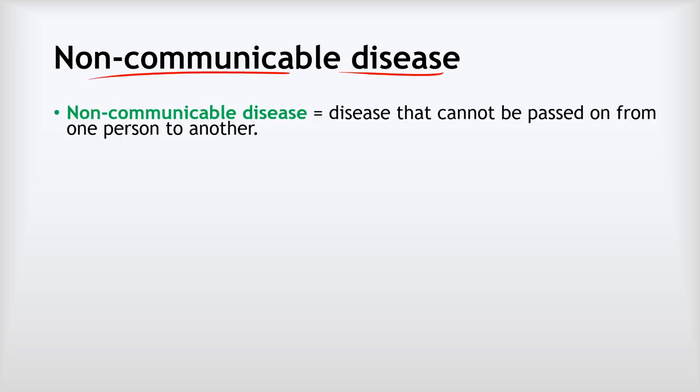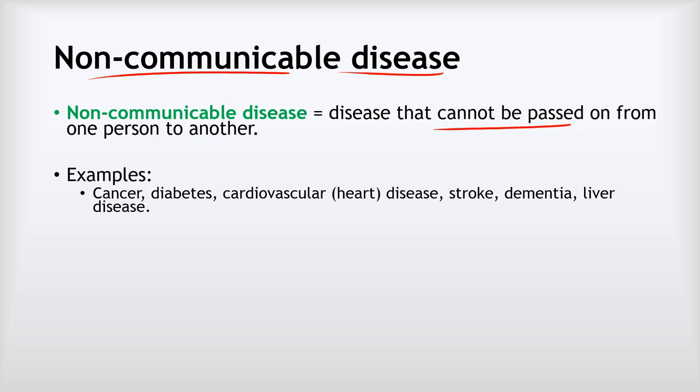A non-communicable disease is simply one that cannot be passed on from one person to another. We're talking about things like cancer, diabetes, cardiovascular or heart disease, stroke, dementia, liver disease and so on. Now all of these are real diseases, but they cannot be passed on from one person to another. If you've got diabetes you can't give it to your friend or your neighbour, and if you've got heart disease they're not going to catch it from you.